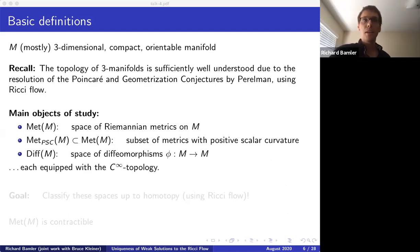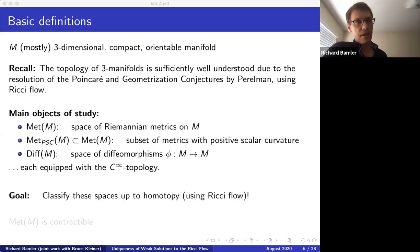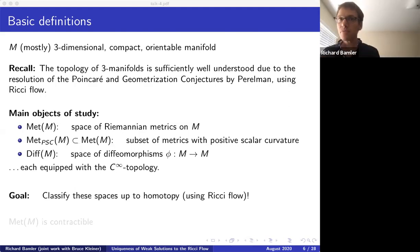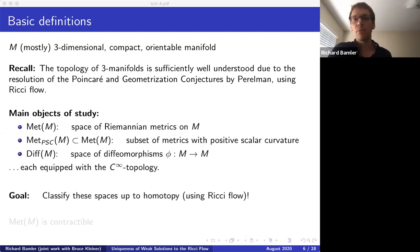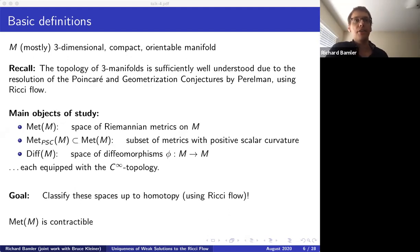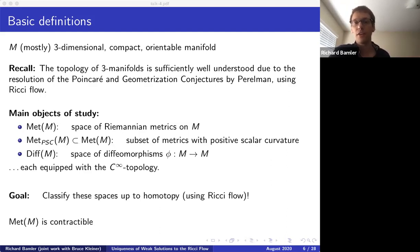My goal in this part of the talk will be to classify these spaces up to homotopy, hopefully using Ricci flow. These are really huge spaces, so it's unlikely we can classify them up to homeomorphism, but we can hope to classify them up to homotopy. One point worth noting: the space of metrics is contractible, because it's a convex subset of a huge vector space — a linear combination of two Riemannian metrics gives another Riemannian metric.